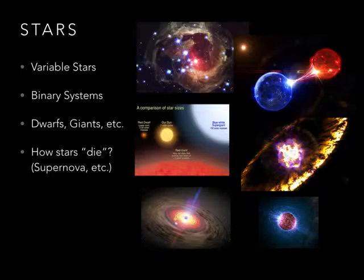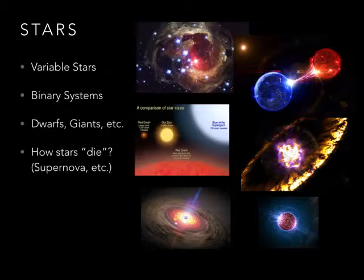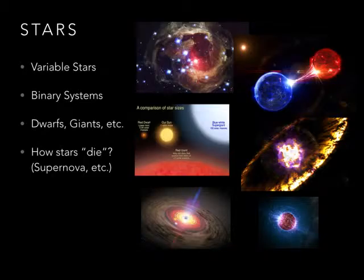Astronomers study how stars die. What we were talking about — supernovae — is one particular way, and that's for super giant stars. But stars like our Sun just kind of fade out. The Sun will get bigger and melt all our planets, then shrink into what we call a white dwarf, and eventually get so small it just disappears.